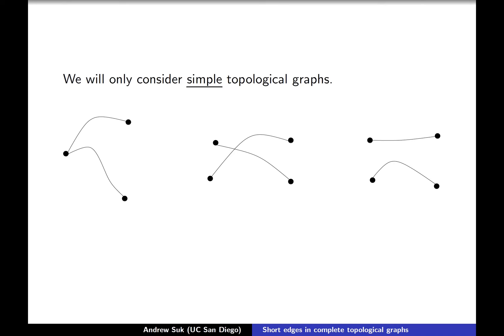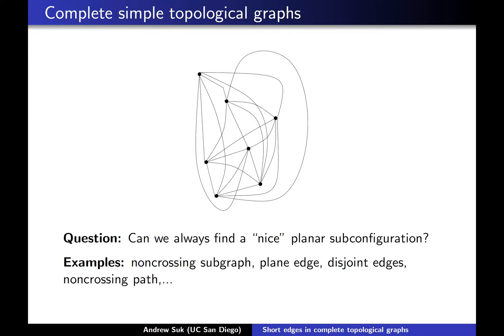Given the complete simple topological graph on n vertices, can we always find a nice planar subconfiguration inside of it? You can easily find a large non-crossing subgraph if you're this general, because you can fix any vertex and look at all of the edges emanating out of it. Since they have that fixed vertex point in common, they've already had that one point in common, so technically they won't cross each other. All of the edges emanating out of this fixed vertex create this planar star.